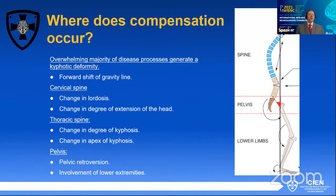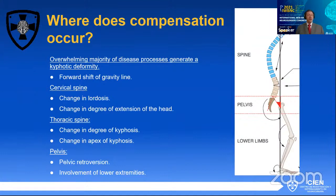So where does spinal compensation occur? As we saw, most of the pathology tends to be kyphosing, but the compensatory mechanisms are going to act in both situations. In a kyphosing deformity, there's going to be a forward shift of the gravity line. So each spinal segment is going to be involved in compensation as much as it can, and at a certain moment in time. Globally, in the cervical spine, you're going to have changes in the curvature or changes in the degree of extension of the head, which is described as the proximal lordosis of the cervical spine.